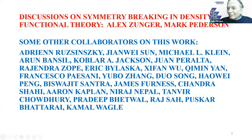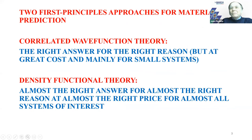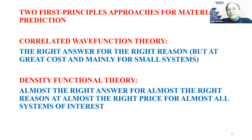There are two first-principles approaches for materials prediction. There's correlated wave function theory and extensions that give the right answer for the right reason, but often at great cost and mainly for small atoms and molecules. And there's density functional theory, which in contrast promises to give almost the right answer for almost the right reason at almost the right price, for almost all systems of interest. My talk will be about density functional theory.